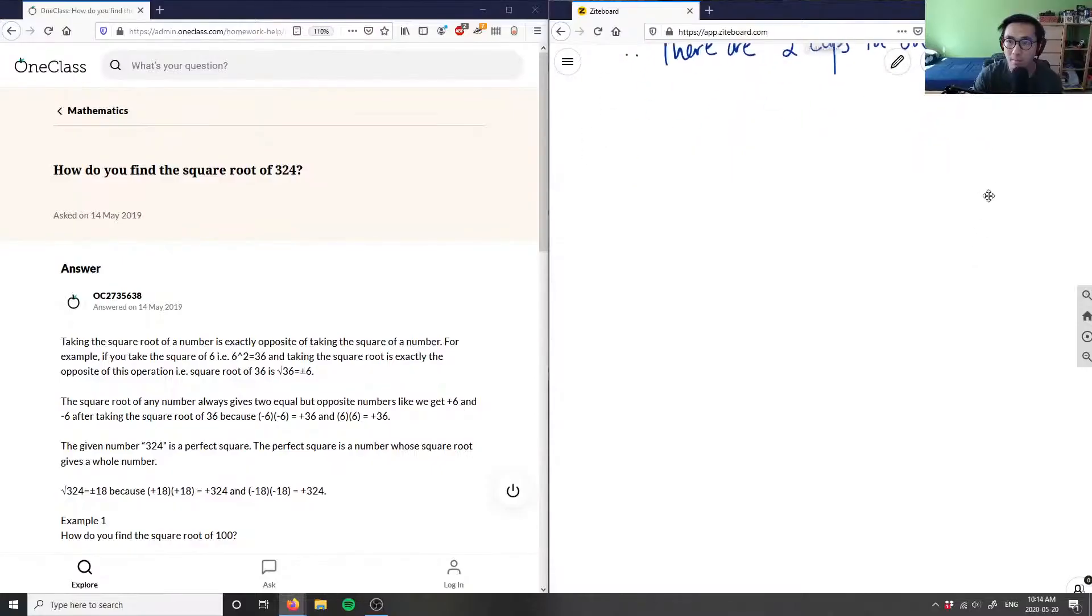Okay, number four. How do you find the square root of 324? I want to find the square root of 324. So in this case, there's actually three methods you can use: you can use trial and error, you can use prime factorization, or you can use the long division solution.